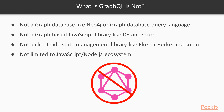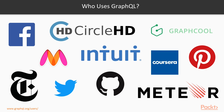GraphQL is often implemented in different languages like Python, Java, and Ruby. You can pick your language and start working on GraphQL. As for who uses GraphQL, these are the companies that have started using GraphQL either in development or in production. You can visit the URL for more information.